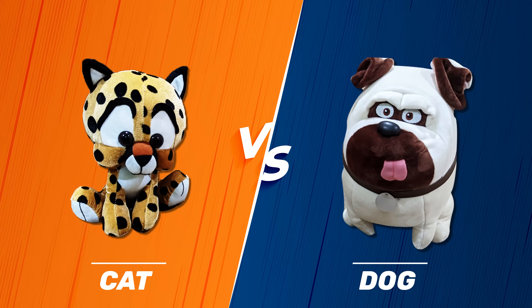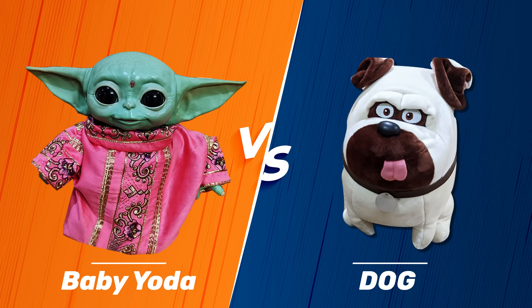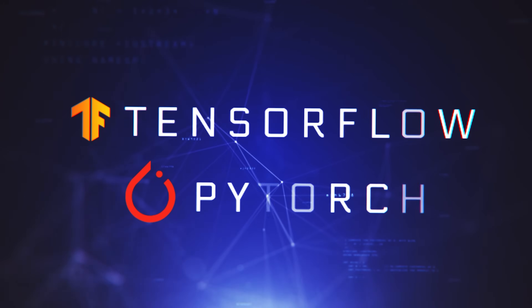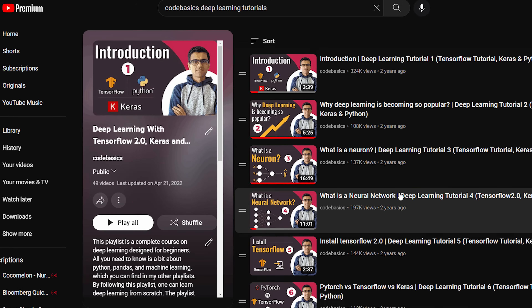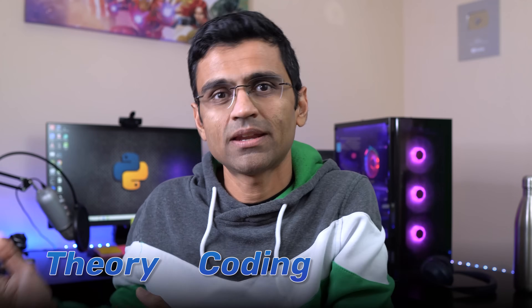Deep learning is a sub-domain of machine learning where you use neural networks to solve a variety of problems such as image classification, language translation, recommendation engines, autonomous cars, and so on. TensorFlow from Google and PyTorch from Facebook are the two prominent libraries for doing deep learning. There is a free TensorFlow playlist which has received a huge number of views and contains theory, coding, and exercises.